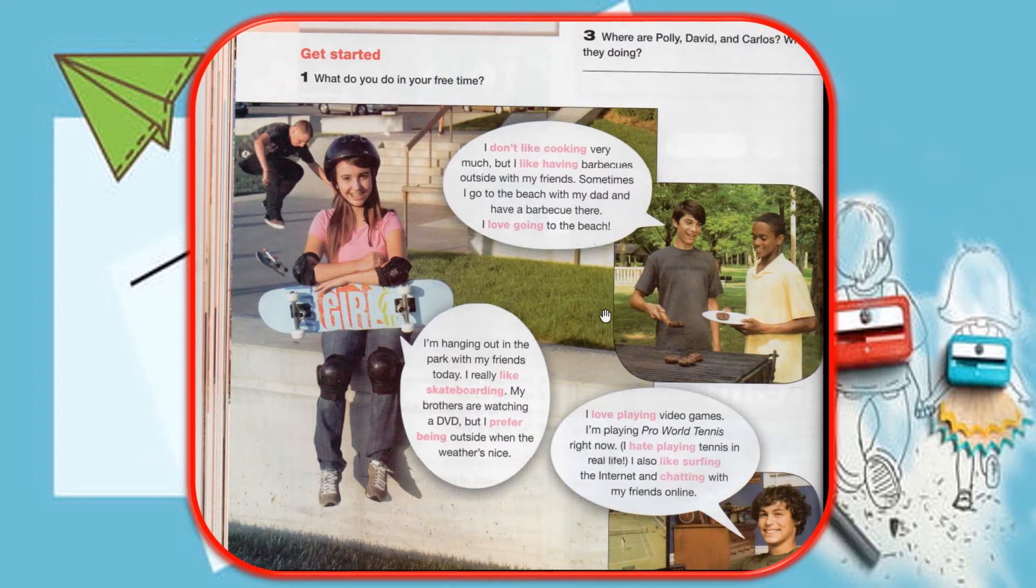Page 70, unit 8c, read exercise 2. I'm hanging out in the park with my friends today. I really like skateboarding. My brothers are watching a DVD, but I prefer being outside when the weather's nice. I don't like cooking very much, but I like having barbecues outside with my friends. Sometimes I go to the beach with my dad and have a barbecue there.